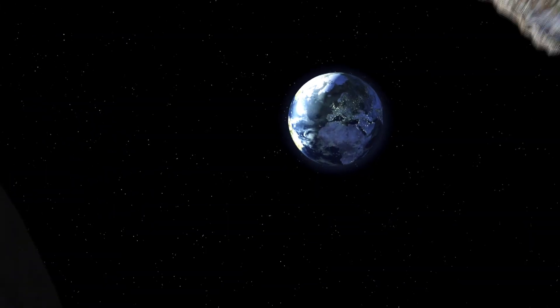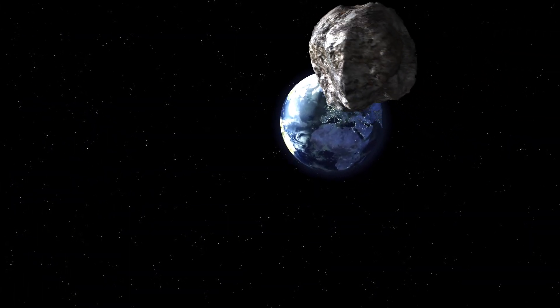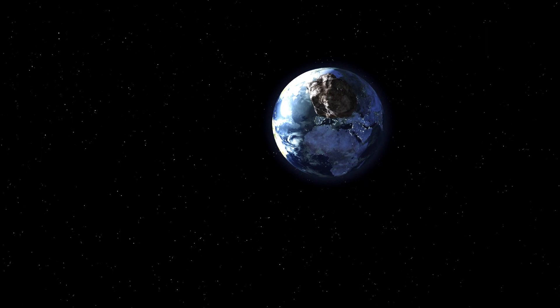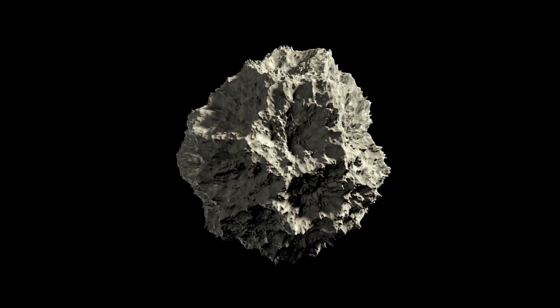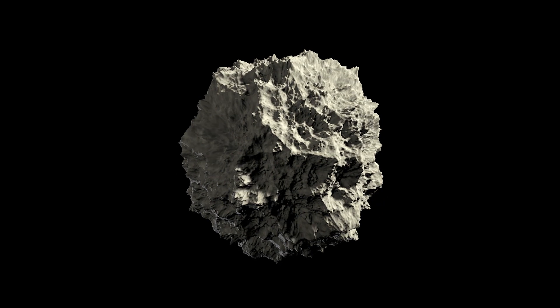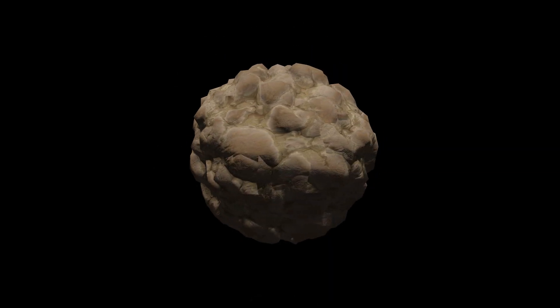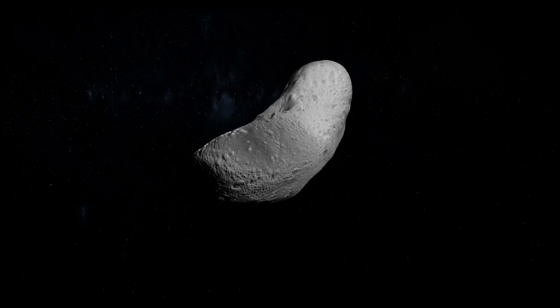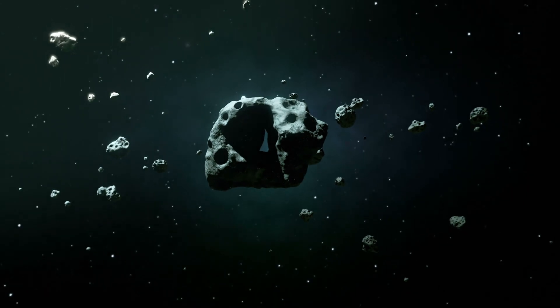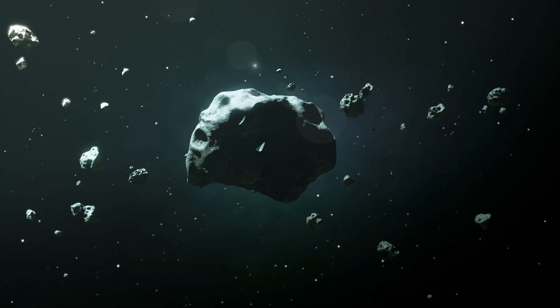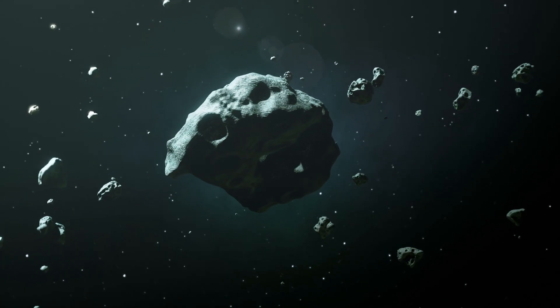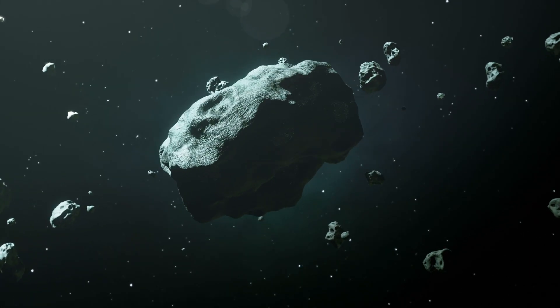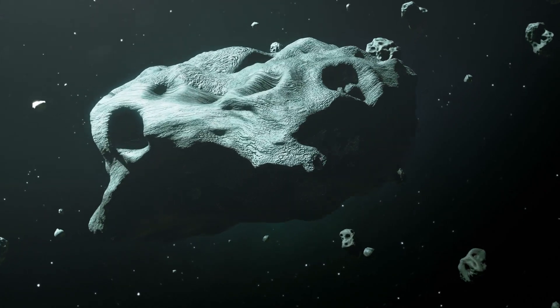Asteroids are remnants of the early solar system made primarily of rock and metal. They come in various shapes and sizes, ranging from a few meters to hundreds of kilometers in diameter. These celestial bodies are composed of minerals and organic compounds, and some even contain water ice.